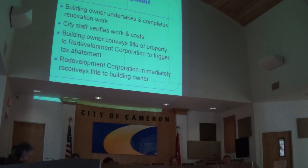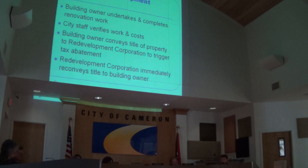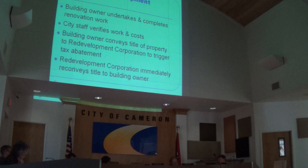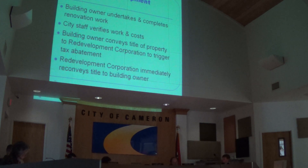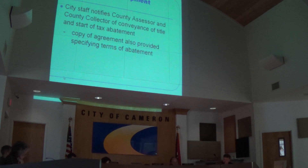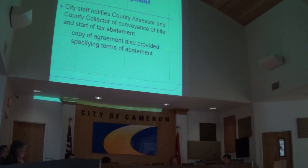The city goes out to the building and verifies that the work was done and that the actual costs match what was estimated. After that, the building owner conveys the title to the property to the redevelopment corporation — that conveyance is what triggers the tax abatement. The URC then immediately conveys the title back to them, so the redevelopment corporation acts as a quick pass-through to trigger the abatement. City staff then notifies the county assessor and collector of the conveyance to start the tax abatement.